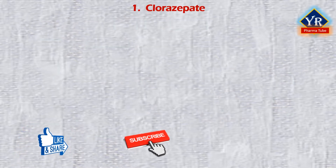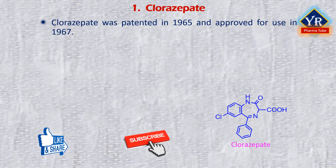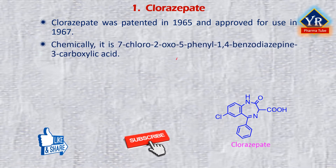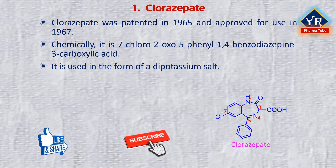The first drug of this lesson is chlorazepate. Chlorazepate was patented in 1965 and approved for medical use in 1967. It is chemically 7-chloro-2-oxo-5-phenyl-1,4-benzodiazepine-3-carboxylic acid, used in the form of a dipotassium salt. It is a 1,4-benzodiazepine in which the oxo group is present at the second position and which is substituted at positions 3, 5, and 7 by carboxy, phenyl, and chloro groups respectively.